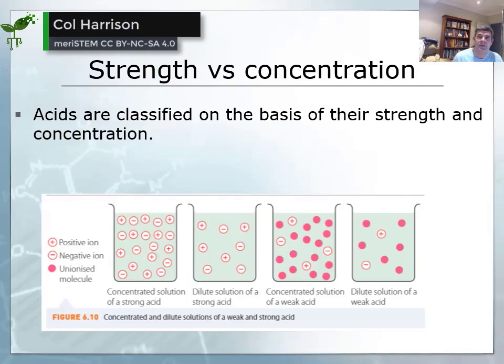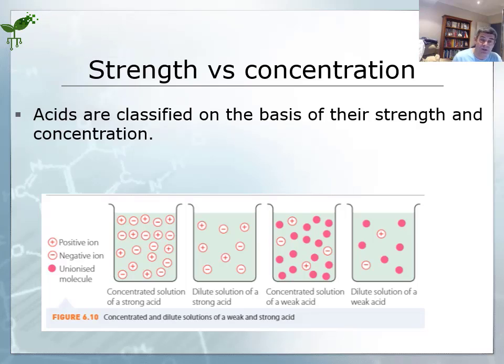We've already looked at how different substances behave and how we classify them based on their ability to donate or accept a proton, or do both. But there's another way we describe acids and bases: on the basis of their strength or concentration.